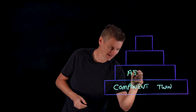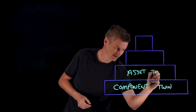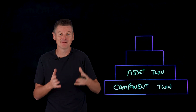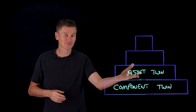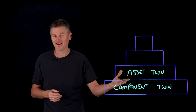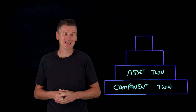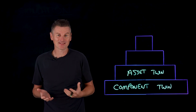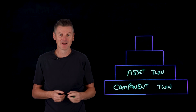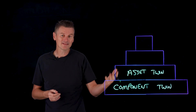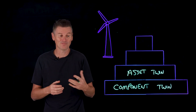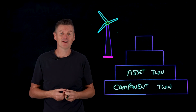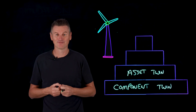The next layer up is asset twins. Asset twins represent an entire asset made up of multiple components working together. Asset twins let you study the interaction of those components, creating performance data that can be processed and turned into actionable insights. An asset twin for a wind turbine would integrate data from all of its components — like the blades, the gearbox, and the generator — to monitor overall performance and predict failures.